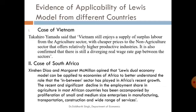The second case study is South Africa. The Lewis dual economy model can be applied to economies of Africa to better understand the role that the in-between sector has played in Africa's recent growth. The significant decline in the employment share in agriculture in most African countries has been accompanied by growth in small and medium-sized enterprises in manufacturing, transportation, construction, and a wide range of services. The Lewis model is applicable, with surplus labor moving from the traditional sector to the modern industrial sector.